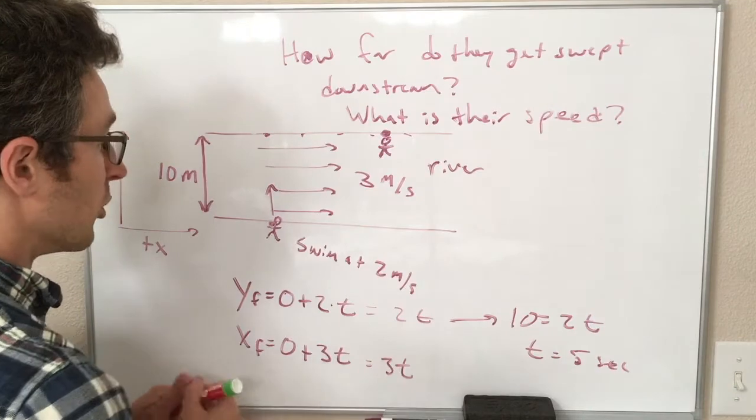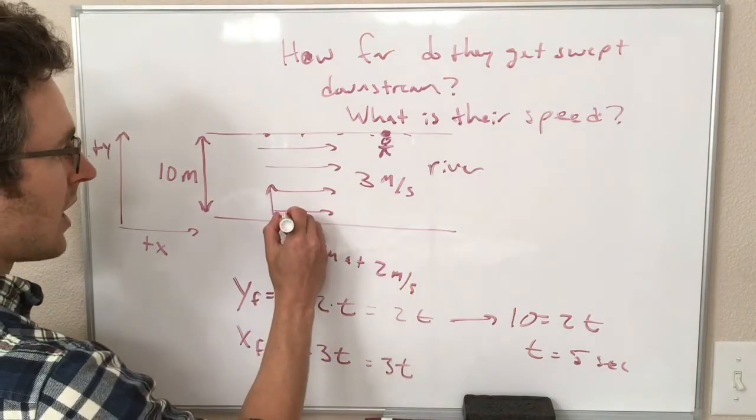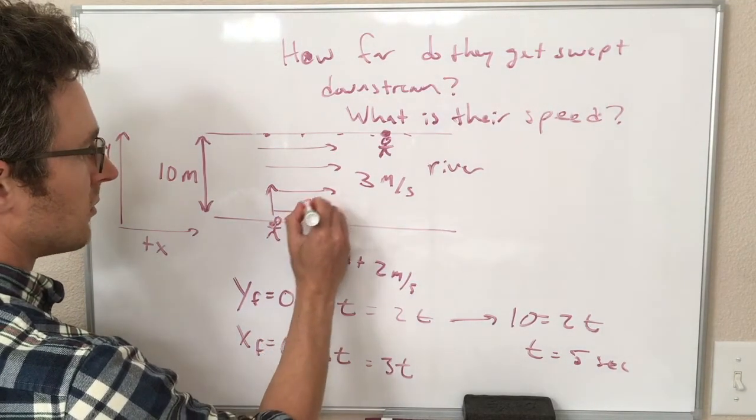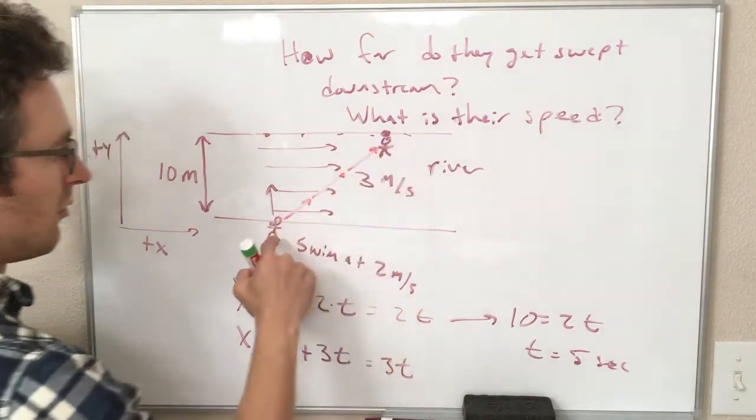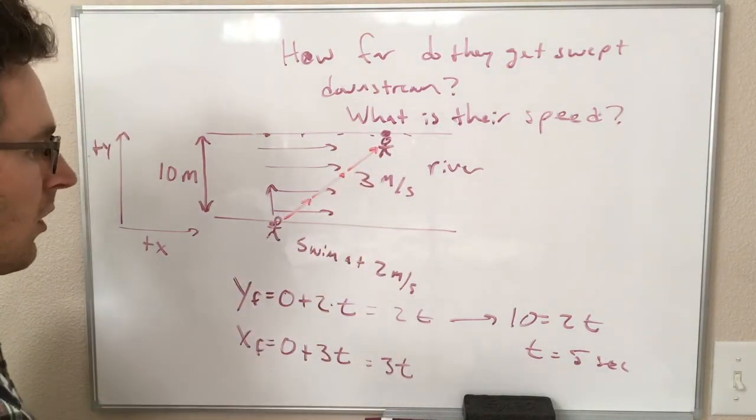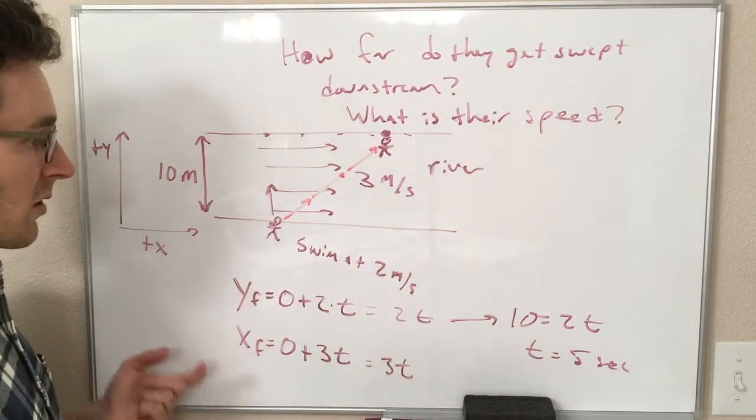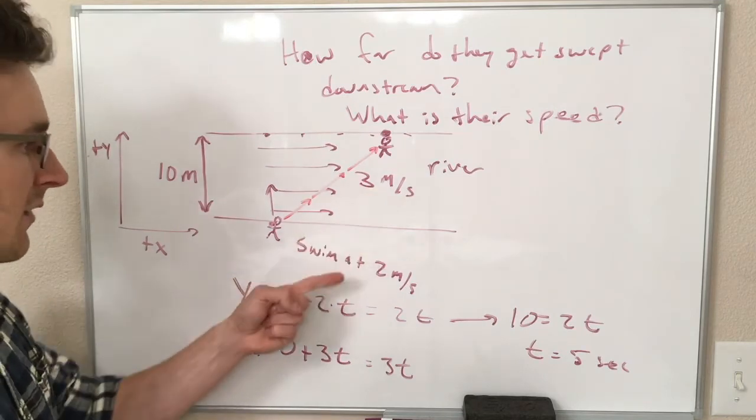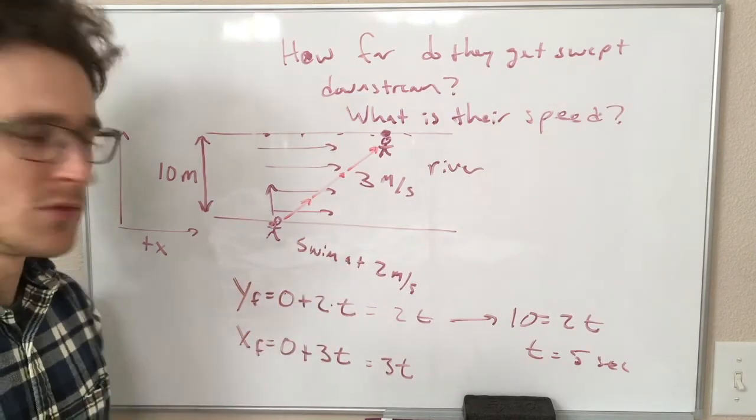so it would appear from above that they have a velocity that is diagonal going from this point to this point, where the x component of their velocity is 3 meters per second and the y component of their velocity is 2 meters per second.